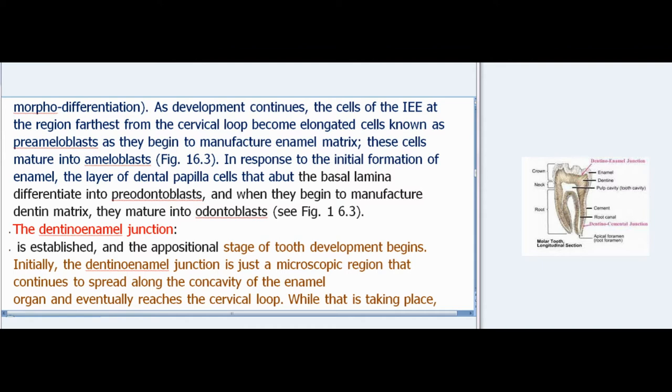As development continues, cells of the IEE at the region farthest from the cervical loop become elongated pre-ameloblasts. As they begin to manufacture enamel matrix, these cells mature into ameloblasts. In response to the initial formation of enamel, the layer of dental papilla cells abutting the basal lamina differentiate into pre-odontoblasts, and when they begin to manufacture dentin matrix they mature into odontoblasts.